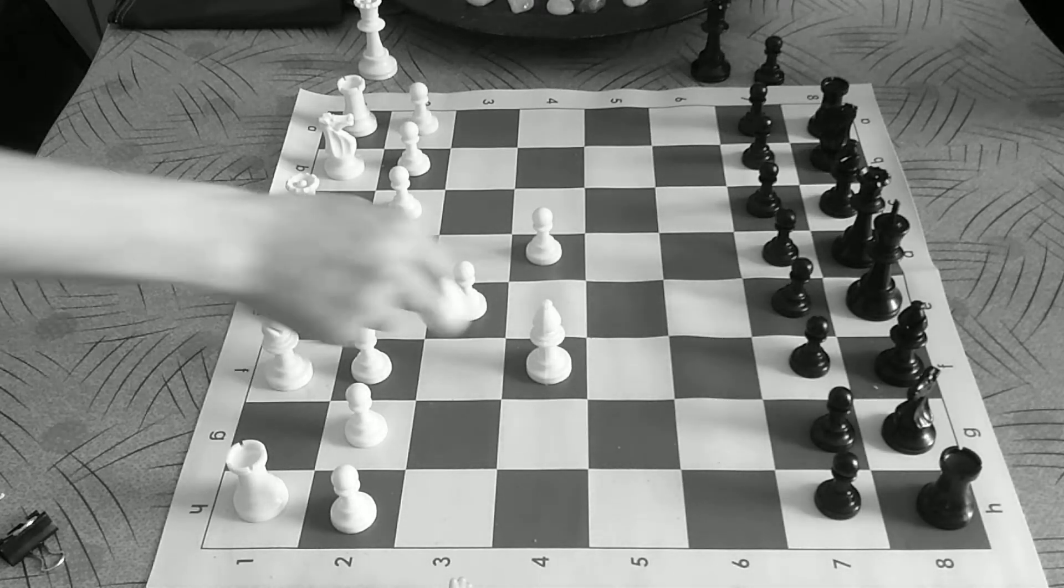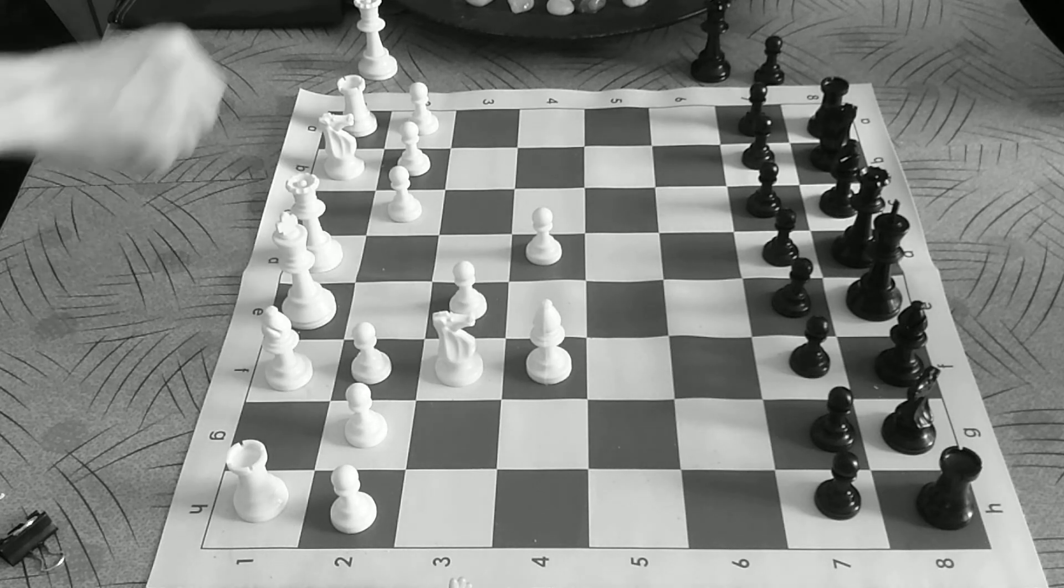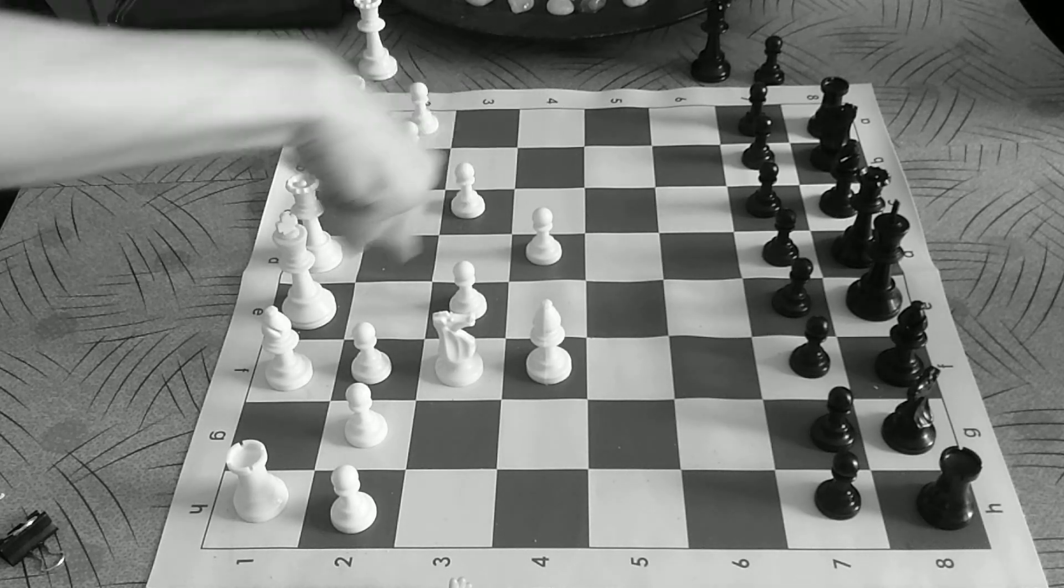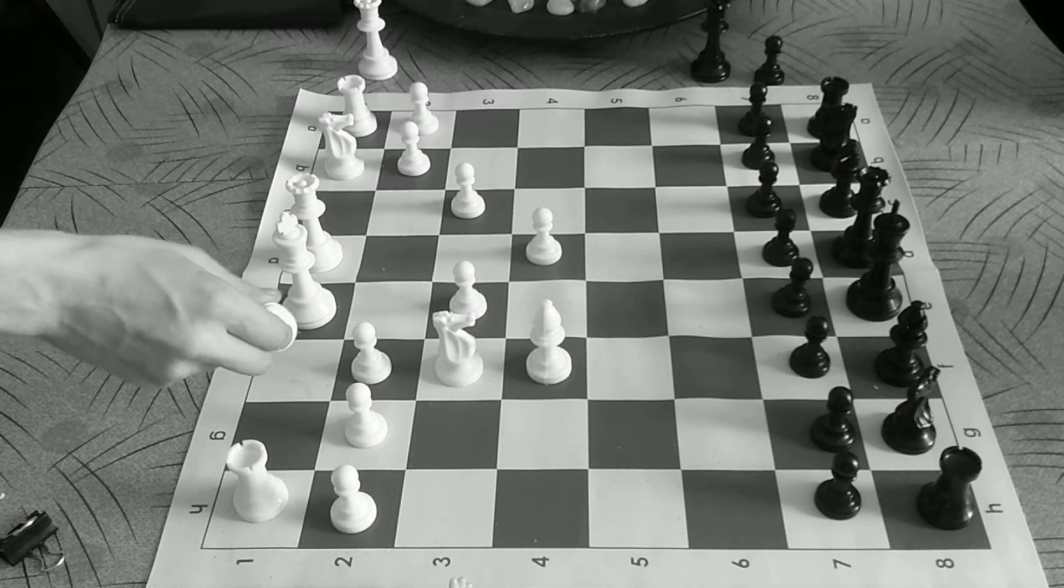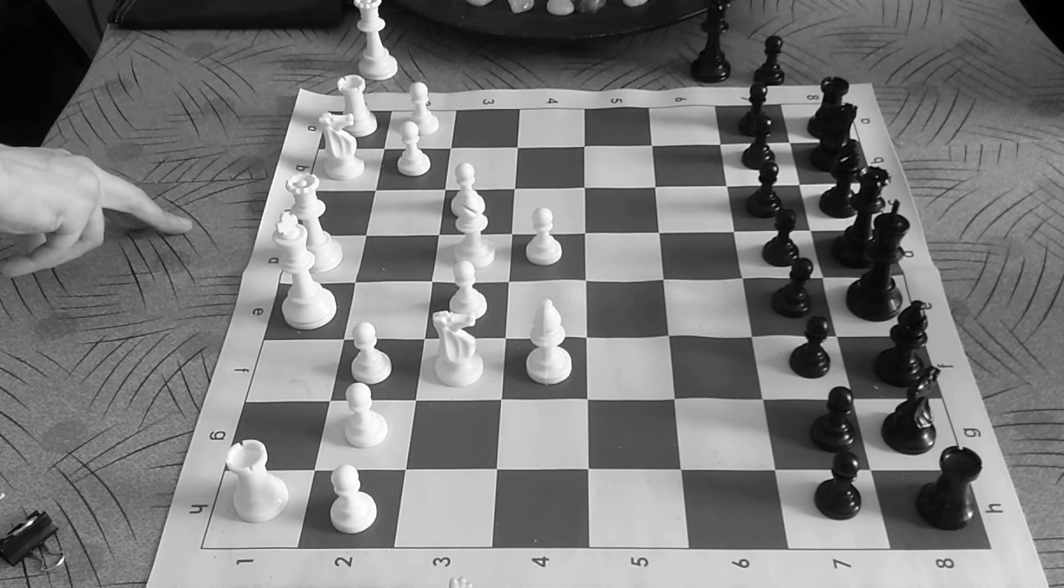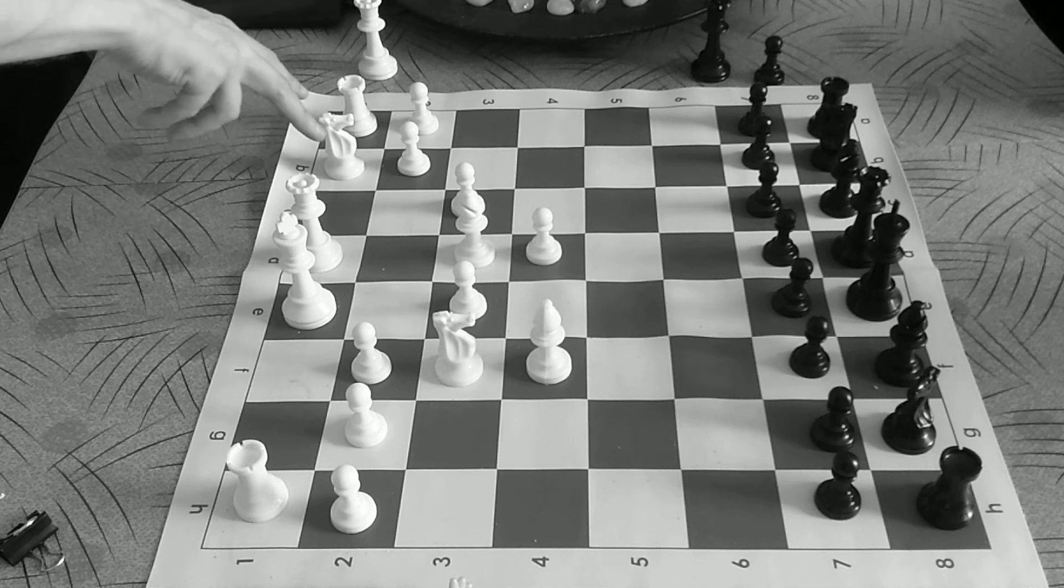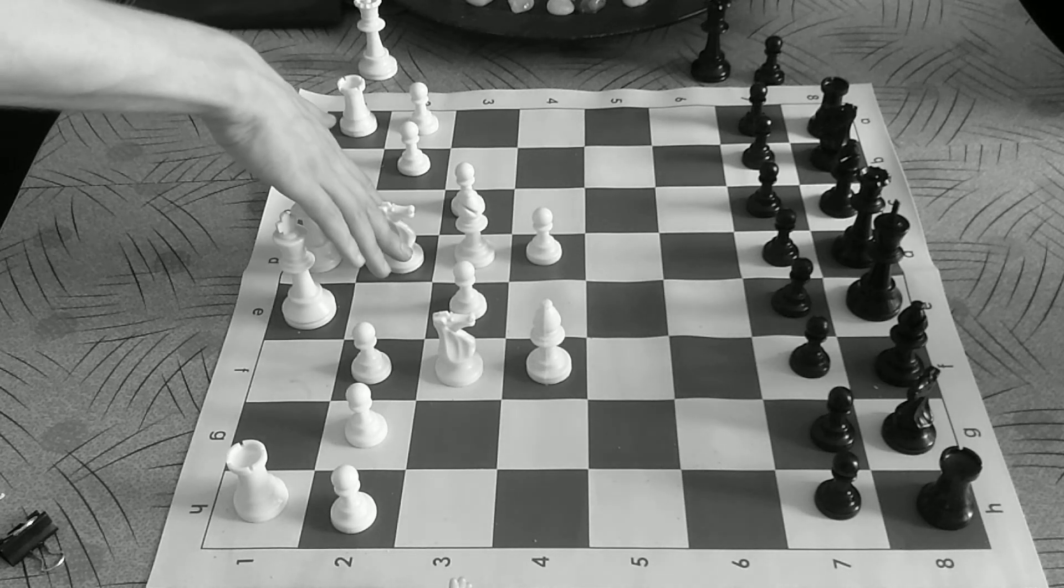And then you want to get this knight here, this pawn here to complete this little triangle hat pawn structure there. This bishop is well placed here. And for reasons that I don't really understand personally yet, they say this knight wants to come here.